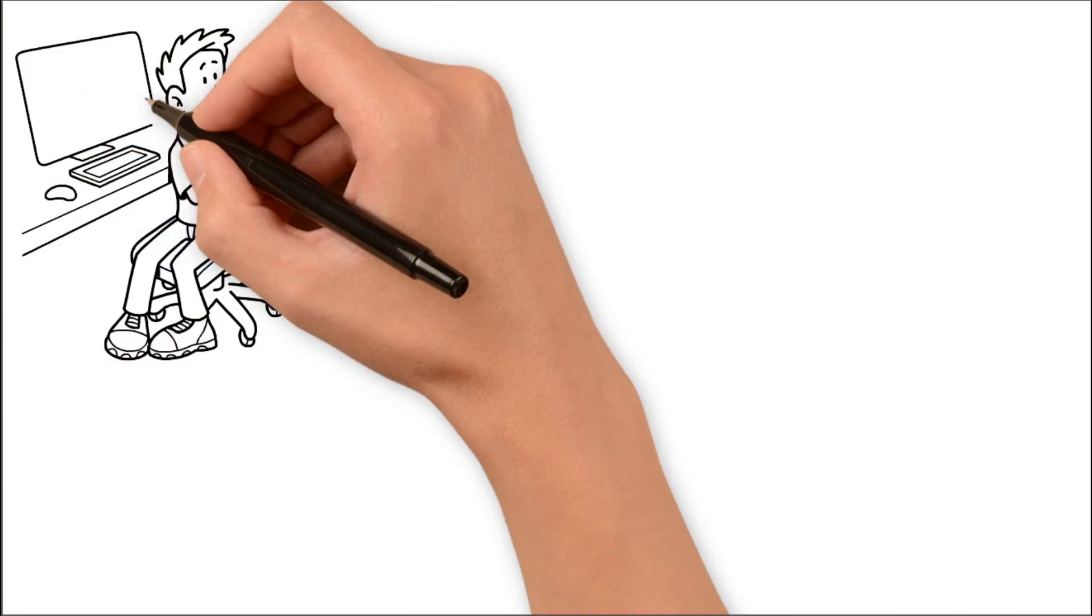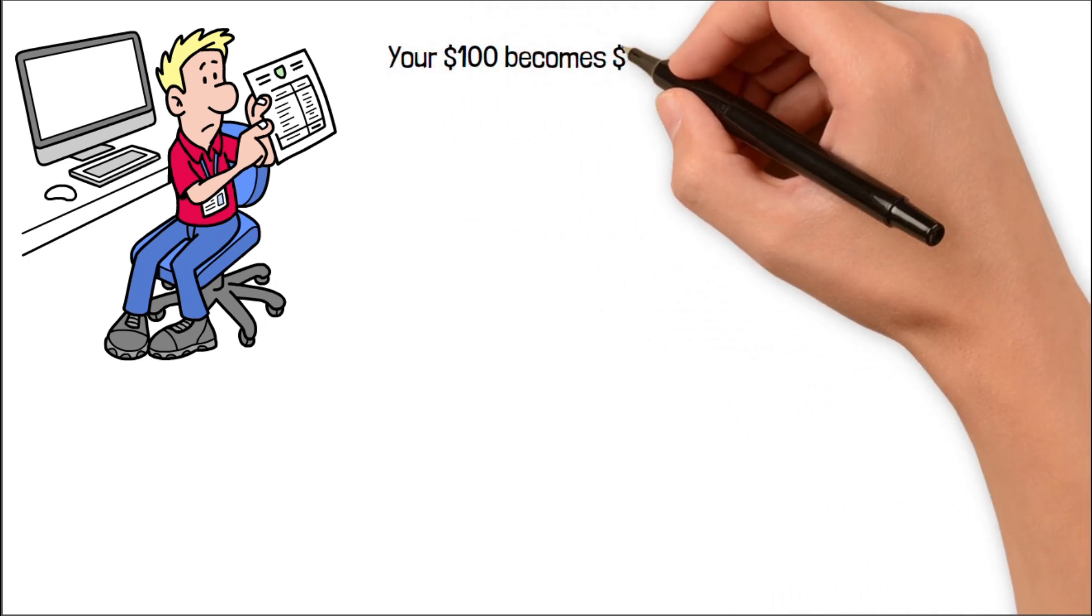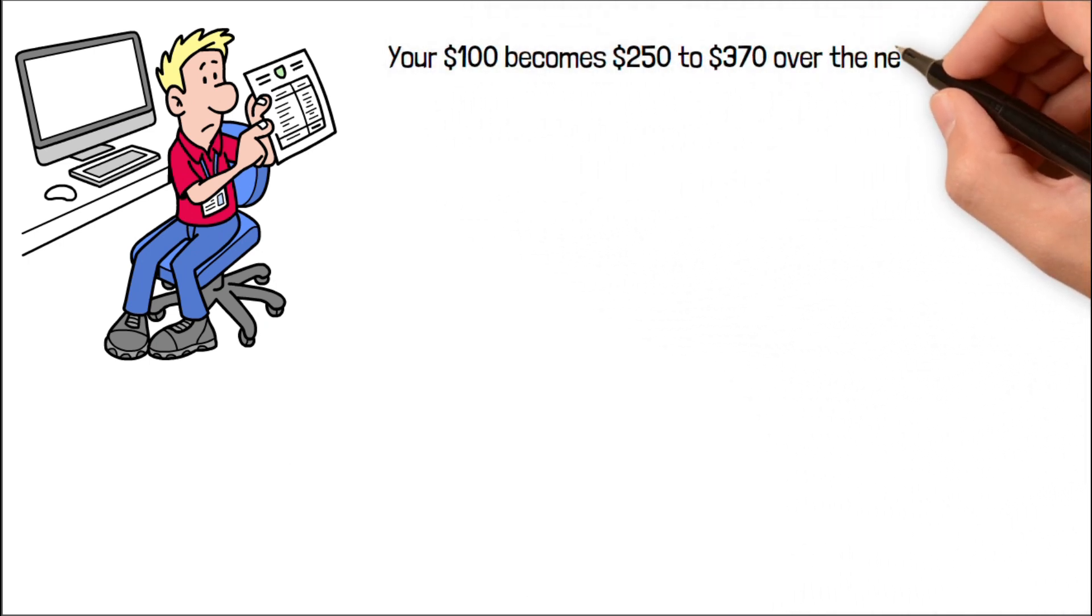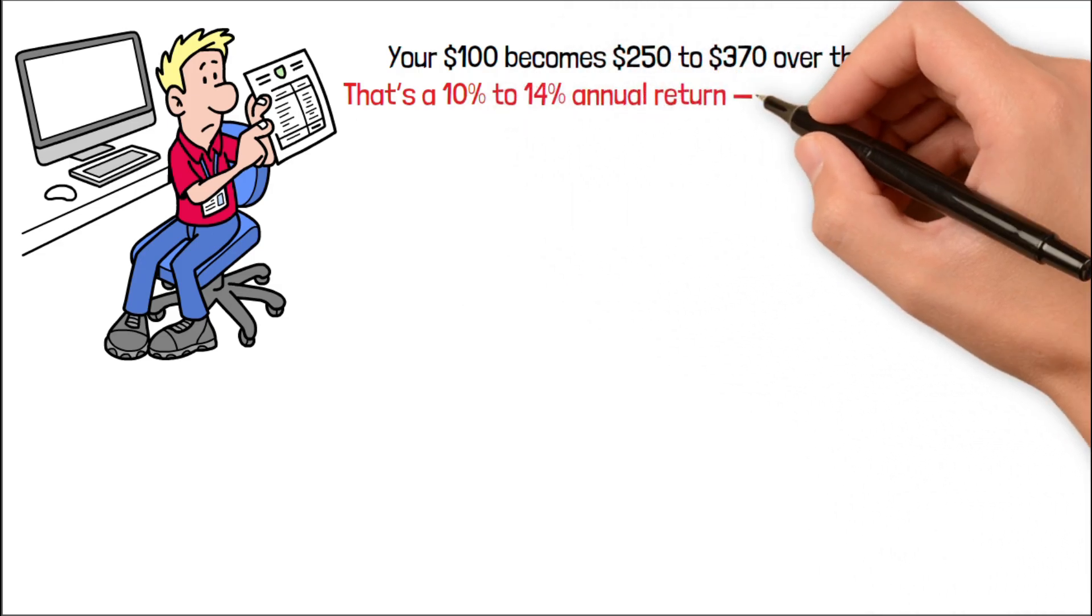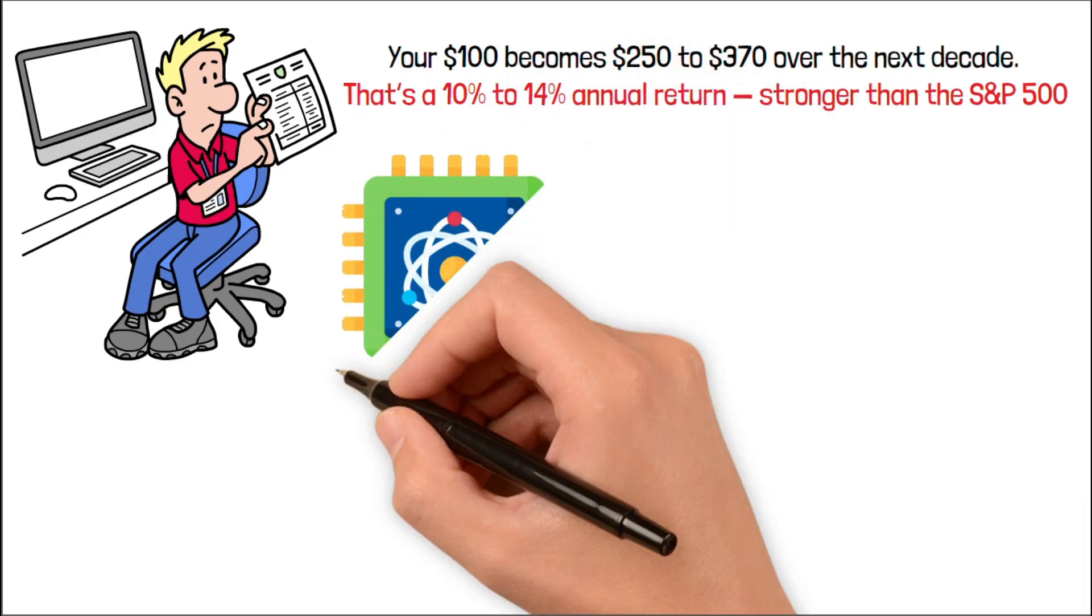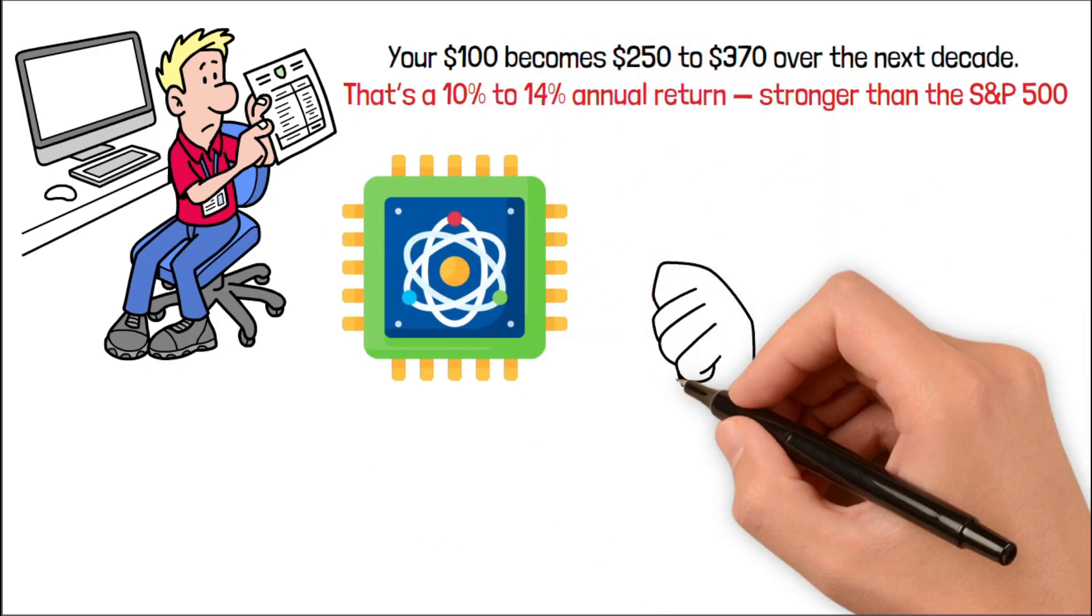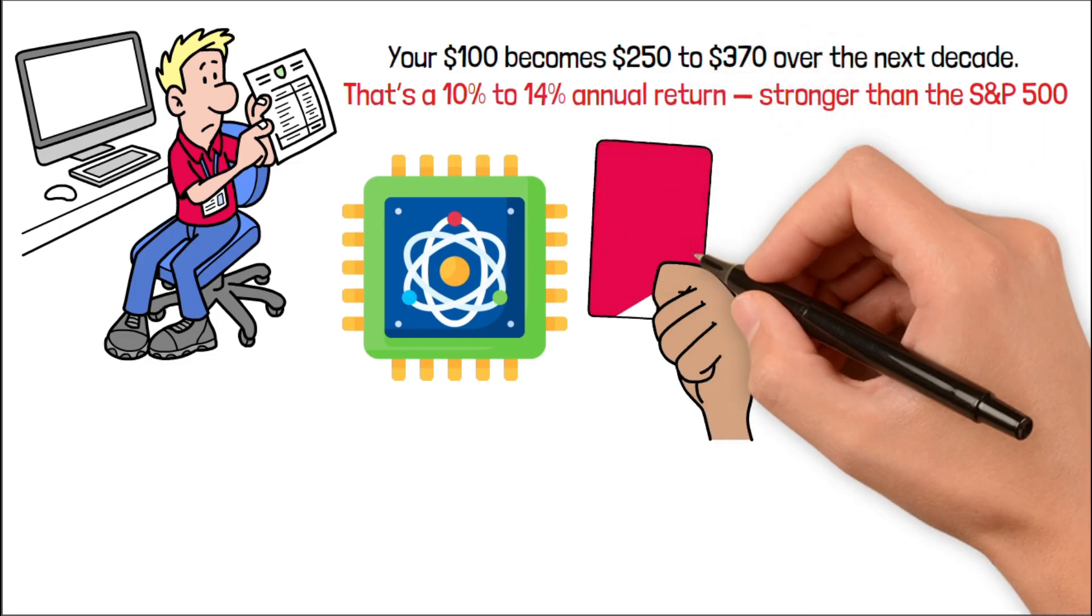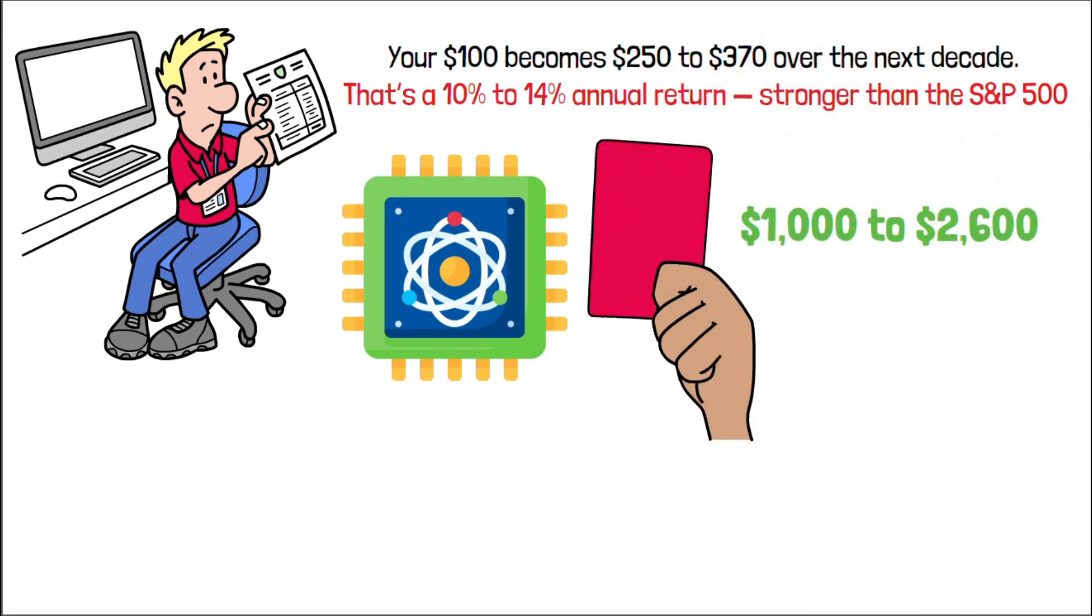Now let's look at what this could mean. Realistically, conservative scenario, your $100 becomes $250 to $370 over the next decade. That's a 10% to 14% annual return. Stronger than the S&P 500. But if quantum arrives on time, and one or two of the builders or dreamers explode, that same $100 could realistically hit $1,000 to $2,600. That's the power of asymmetric positioning.